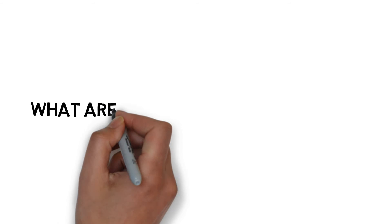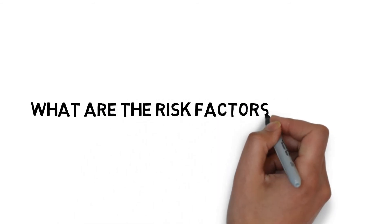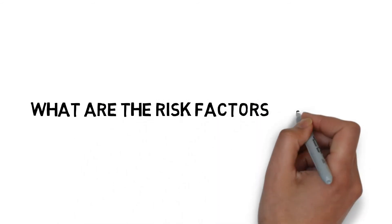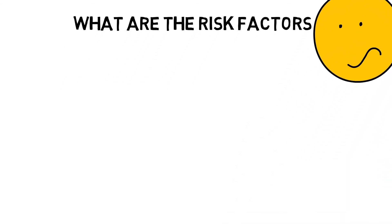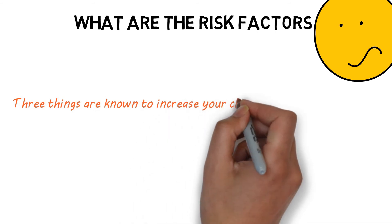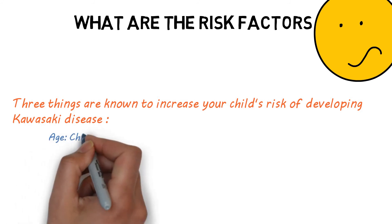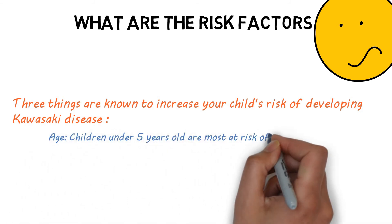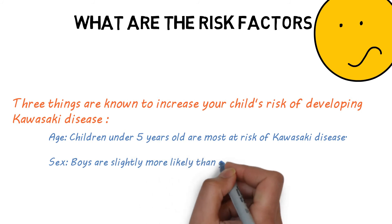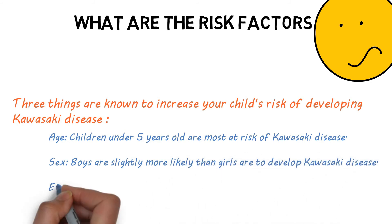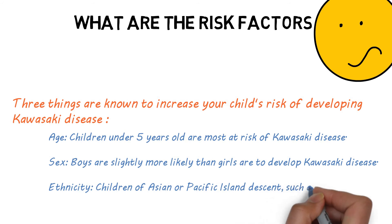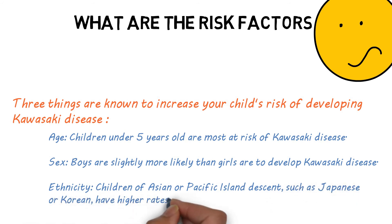What are the risk factors? Three things are known to increase your child's risk of developing Kawasaki disease. Age: children under five years old are most at risk. Sex: boys are slightly more likely than girls to develop Kawasaki disease. Ethnicity: children of Asian or Pacific Island descent, such as Japanese or Korean, have higher rates of Kawasaki disease.